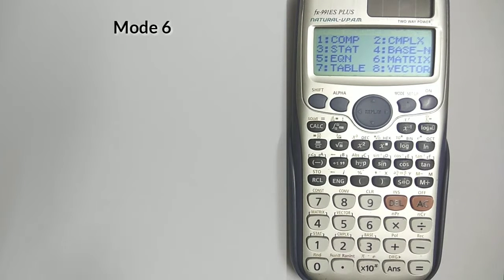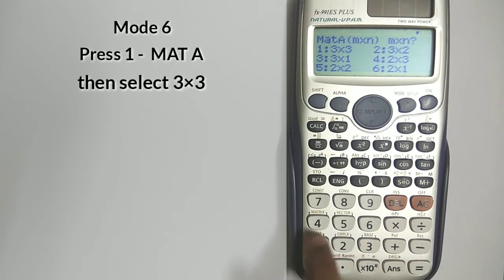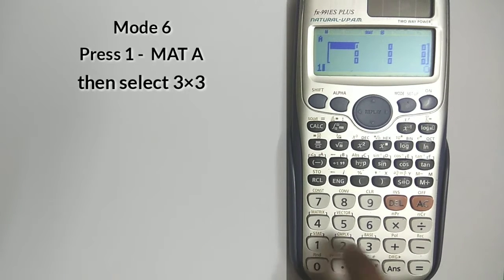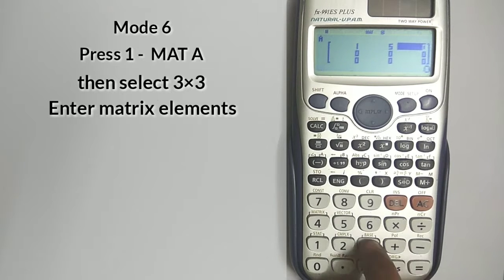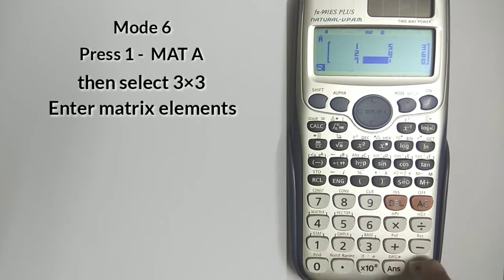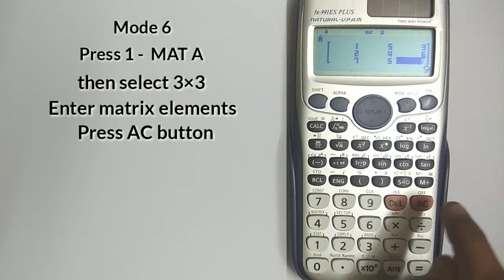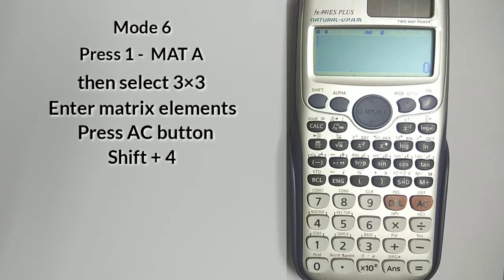First, select mode for matrix operations — press 6. Now select matrix A with 3x3 dimensions. Enter the elements of the matrix, then press the AC button to open the matrix mode options.